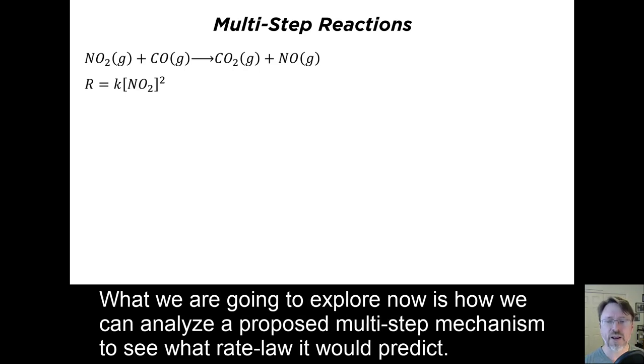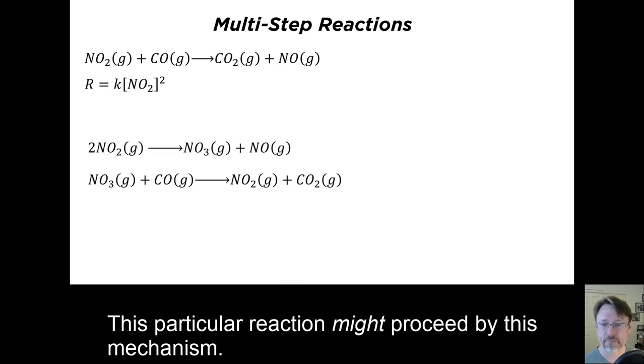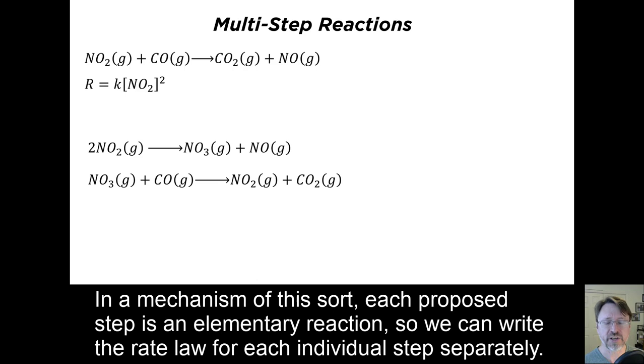What we are going to explore now is how we can analyze a proposed multi-step mechanism to see what rate law it would predict. This particular reaction might proceed by this mechanism. In a mechanism of this sort, each proposed step is an elementary reaction, so we can write the rate law for each individual step separately.